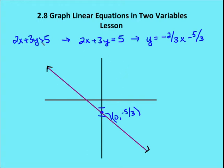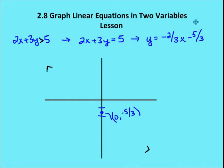We also have to consider whether the inequality is greater than, greater than or equal to, less than, or less than or equal to. In this case we have strictly greater than, so the boundary line itself is not part of the solution. That means we change the solid line to a dotted or dashed line. If the inequality were greater than or equal to, it would be a solid line, but since it's just greater than, we use a dashed line.